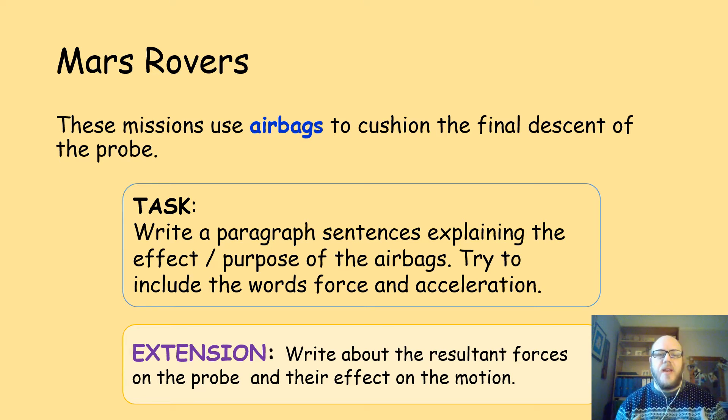Now, you may have seen SpaceX landing rockets vertically, and being able to reuse rockets. This is fantastic, but we just haven't had that technology available before we sent up our Mars rovers. So, what they tend to do is they drop them from parachutes, and they deploy these massive, great, big airbags.